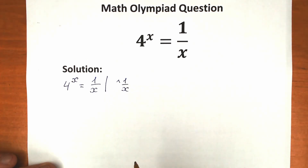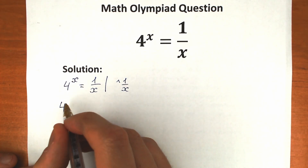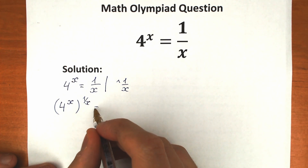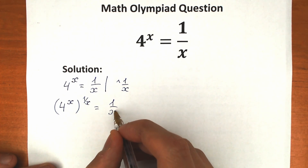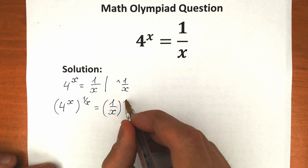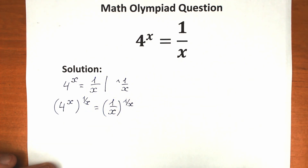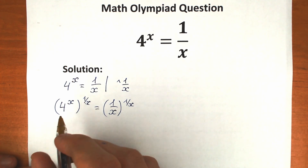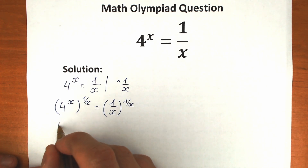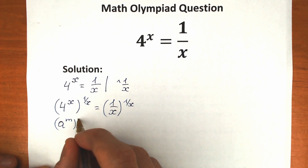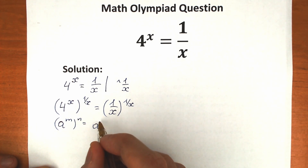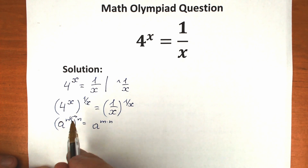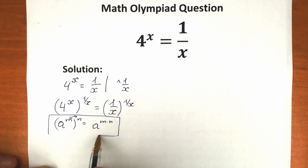Here's our trick. So we have 4 to the power x raised to the power 1 over x, equal to 1 over x to the power 1 over x. Why do we do this? Because if you know a little bit about power rules — exactly this rule: if we have a to the power m raised to the power n, we can easily write it as a to the power m times n. We can multiply both powers. This is a really important rule for us.